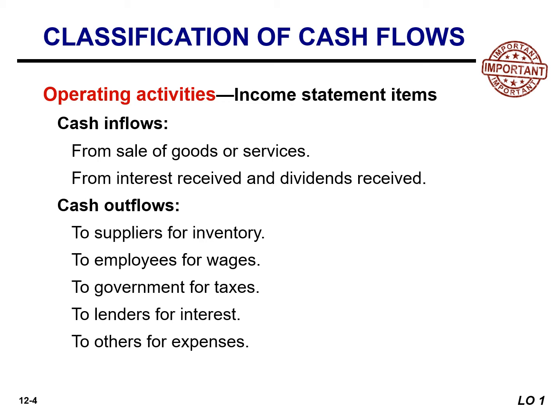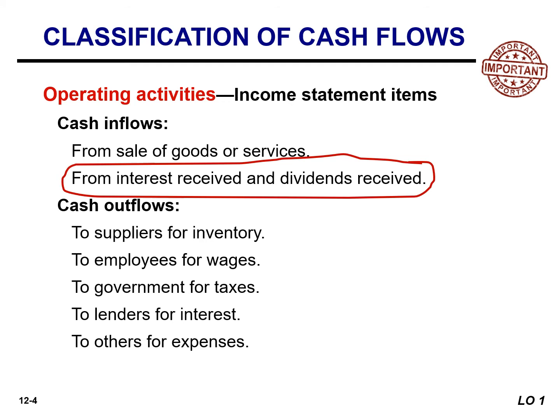Companies classify as operating activities some cash flows related to investing and financing activities. For example, receipts of investment revenue such as interest and dividends are classified as operating activities, as are payments of interest to lenders. Why are these considered operating activities? Because companies report these items in the income statement, where the results of operations are shown.